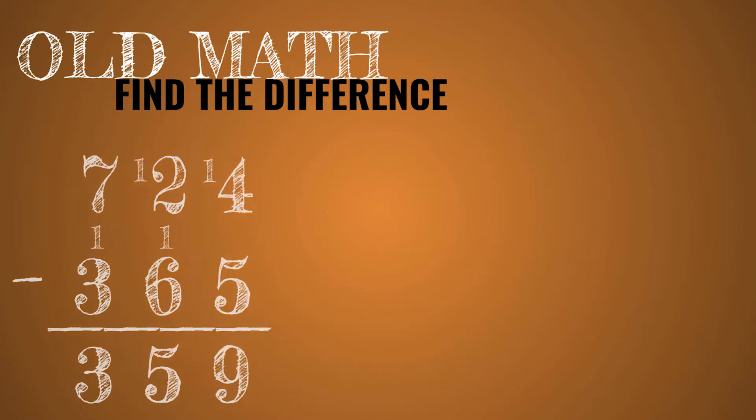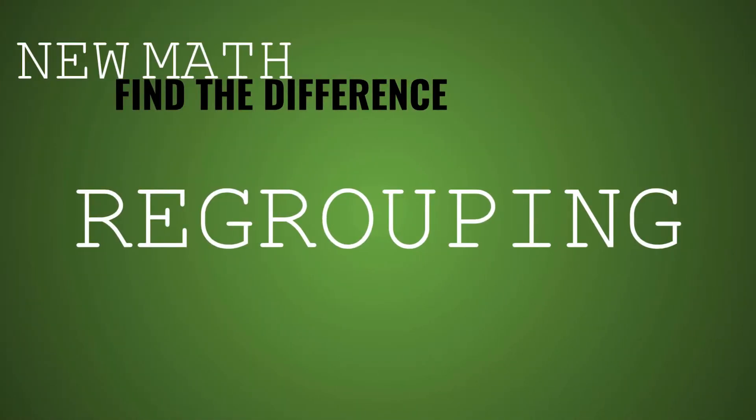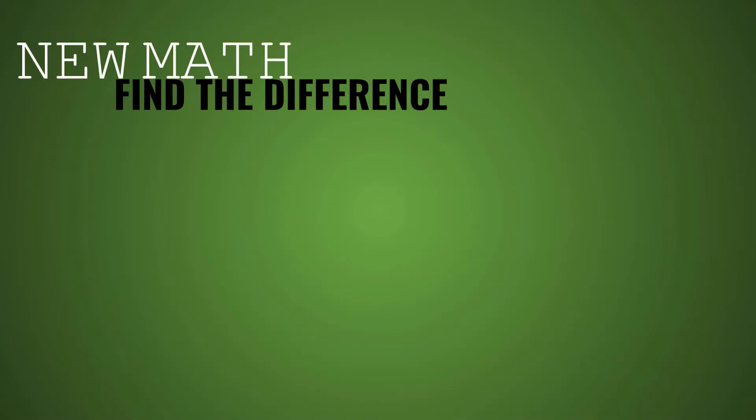So people just thought that borrow and pay back method was just memorizing an algorithm. So when new math came along in the late 1950s, they brought on regrouping. And this is what we think of as subtraction now, like the standard algorithm way.